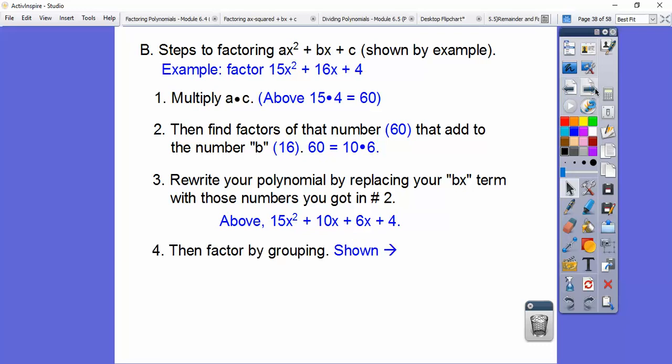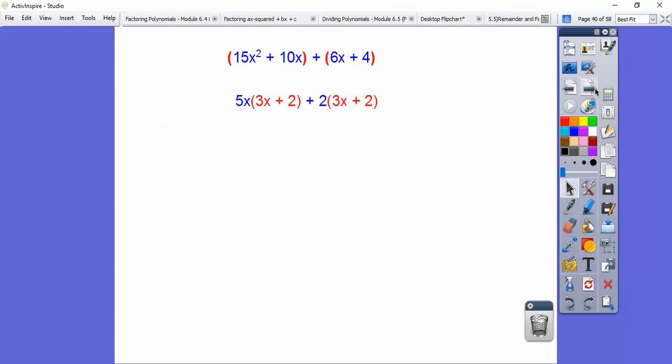And then we factor by grouping. So here it is. So group the first two together and group the second two together. I can pull a 5x out of both of those, left with 3x plus 2. I can pull a 2 out of those, left with 3x plus 2. And then they have a common factor.